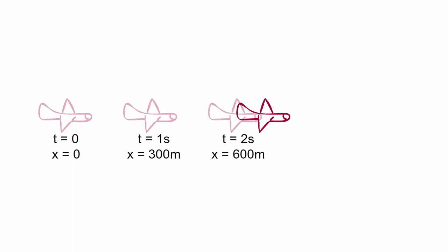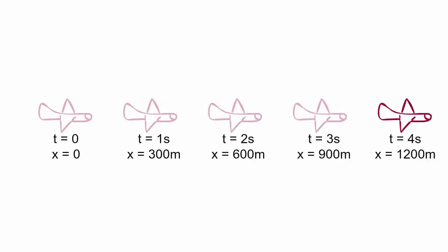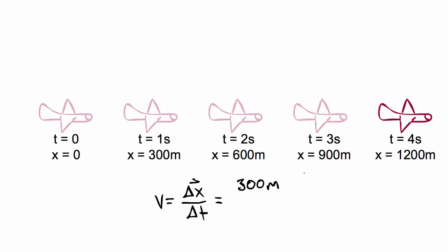Think about an airplane traveling at a fixed velocity, say 300 meters per second to the west. For every second that passes, the airplane must travel exactly 300 meters west. It doesn't matter when we look at the plane, it will always change position by 300 meters to the west if we look for exactly one second.